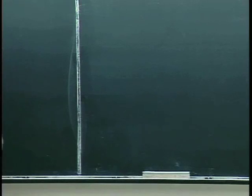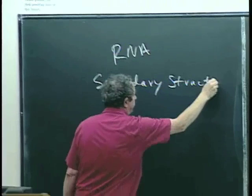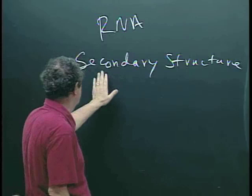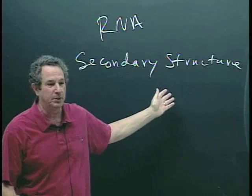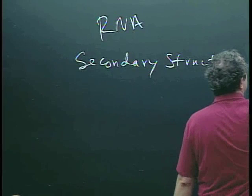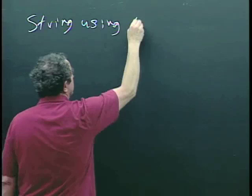Last time we were talking about RNA secondary structure. I mentioned a lot about the biological background of this problem in a hand-waving way. But ultimately it boils down to the following thing: we have a string using an alphabet of four letters — A, T, C, G.